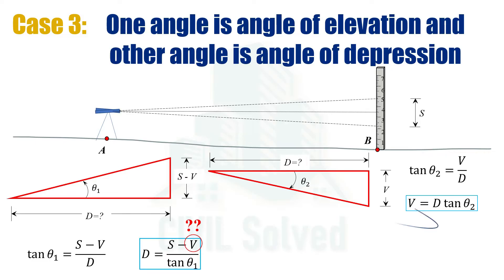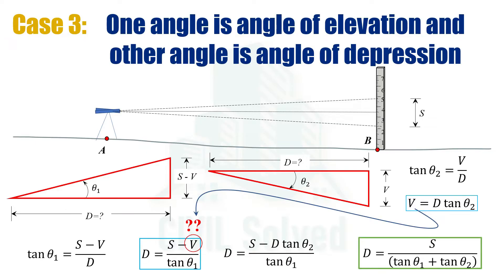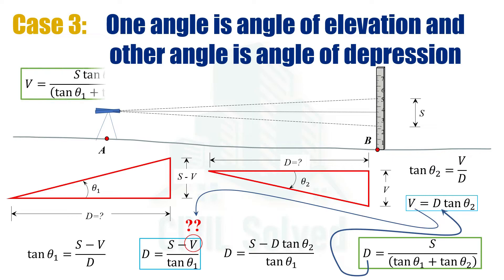Placing the value of v into the equation for d, we will have the formula for d. Simplifying further, we will have the final equation for the distance d. Putting the value of d into the equation for v, we can have the equation for v. In both equations of d and v, we can see that there are three variables: s, θ₁, and θ₂, and all those variables can be noted in the field.